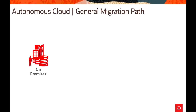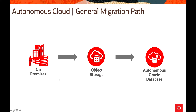Before we start using mv2adb, let's talk about the general migration path. When it comes to on-prem, you have a database on-prem, you want to bring data to object storage, and from object storage you take it to the Oracle Autonomous Database, because you cannot use RMAN clone or similar methods. The suggested way is to use SQL Developer if you have certain files to upload, or to bring Data Pump exports to object storage.